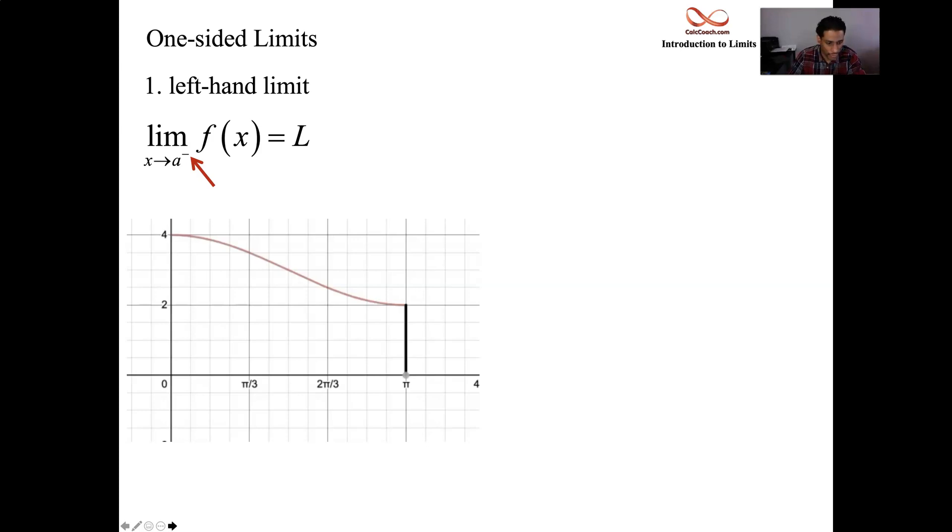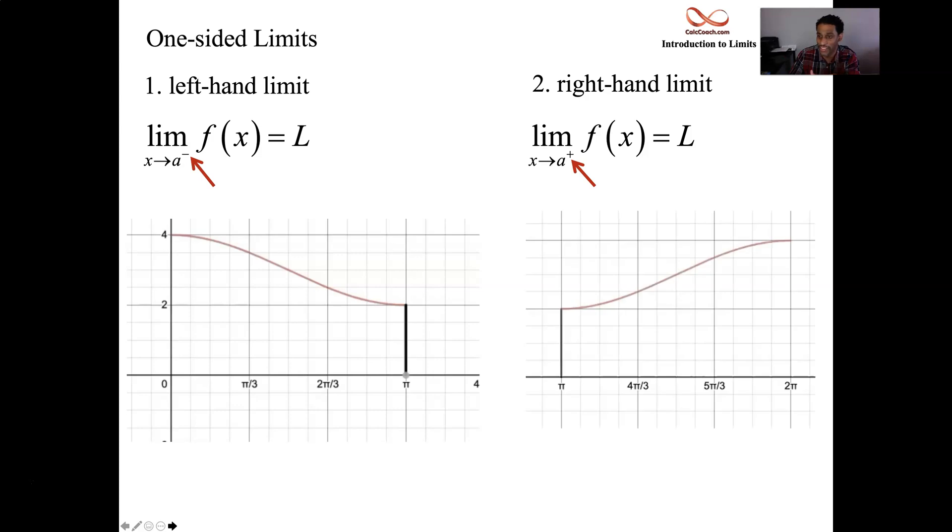So then, right-hand limit. Instead of a minus, what do you think? You're going to put a plus. So here's the same function, but I'm only concerned with the right-hand side. I put a plus there. I only care what's going on from the right. I have no care about what's going on from the left. It turns out that that's also approaching 2. This function is going to also be approaching 2 from the right. The left-hand limit and the right-hand limit happen to agree here.